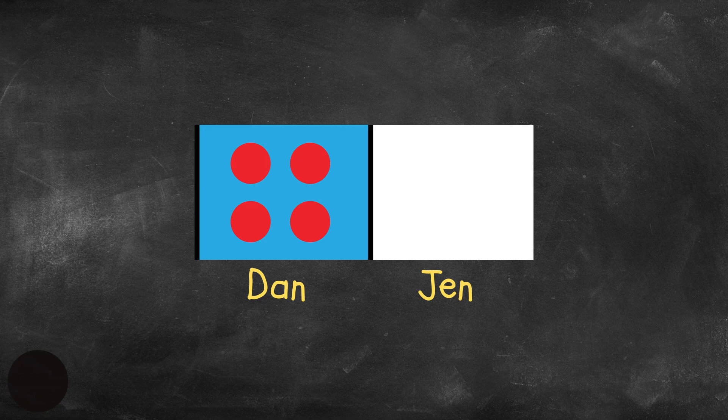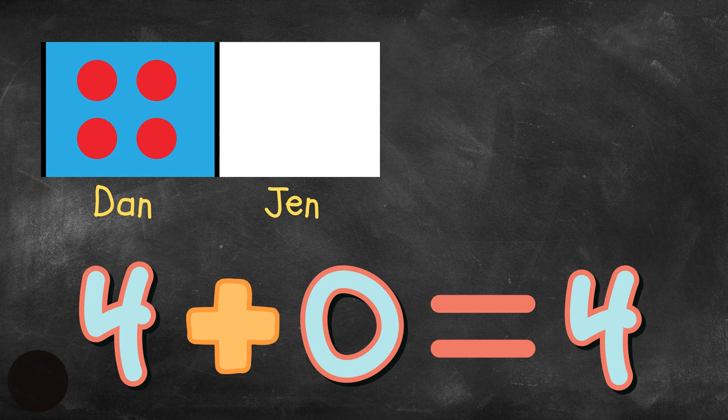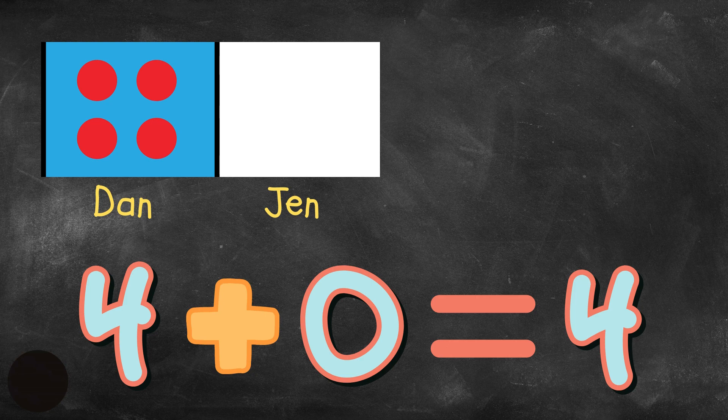Now, let's write an addition sentence to represent this problem. Dan has four. So I put here the number four plus Jen has none, zero. So I'm going to put a zero. So that's four plus zero. Four plus zero equals four because all they have is the four blocks that Dan has.